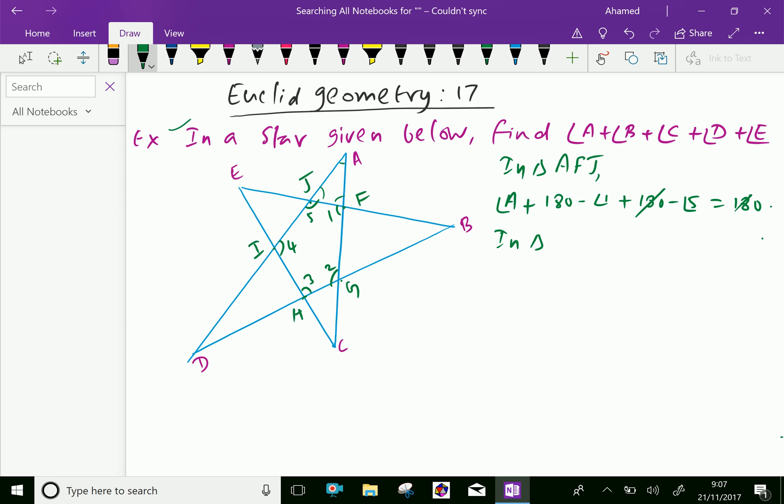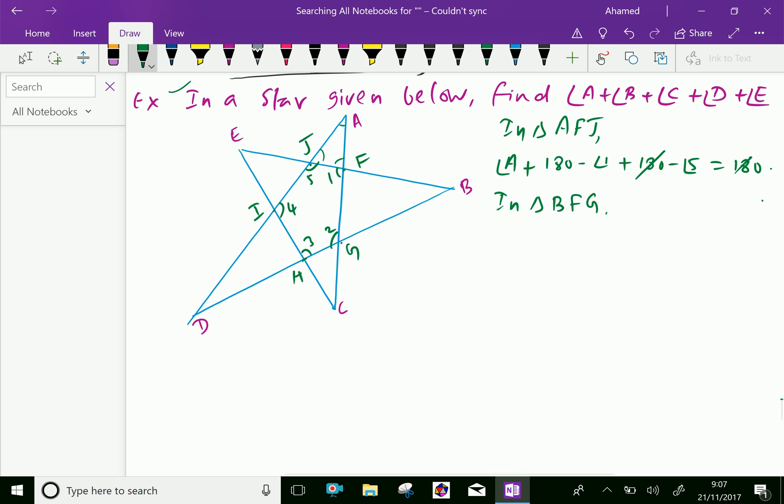Next, triangle BFG, similarly we can express angle B plus 180 minus angle 1 plus 180 minus angle 2 is also 180 degrees. So here 180's and 180's cut here, both sides.